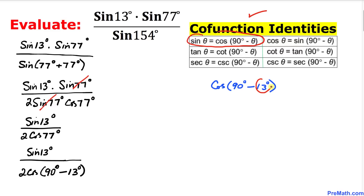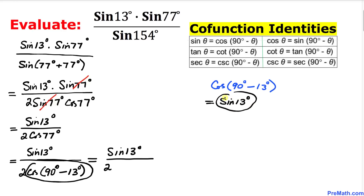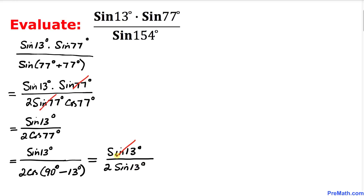We are going to apply the identity: cosine of 90 degrees minus theta equals sine theta. In our case, 13 degrees is our theta. So cosine of 90 minus 13 degrees becomes sine of 13 degrees. Therefore our problem becomes sine of 13 degrees divided by 2 times sine of 13 degrees. The sine of 13 degrees in the numerator and denominator cancel each other out.